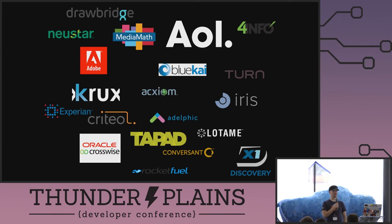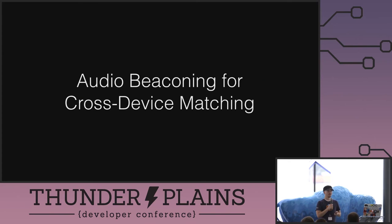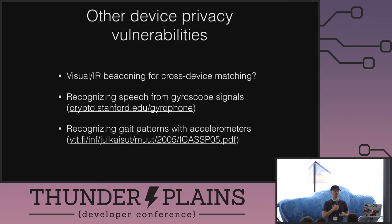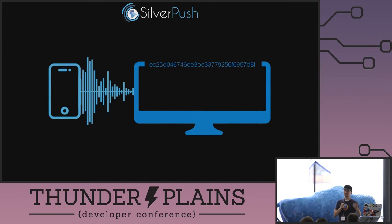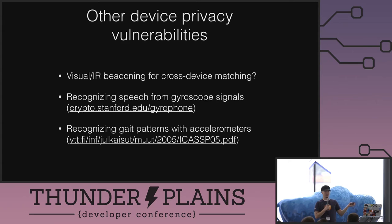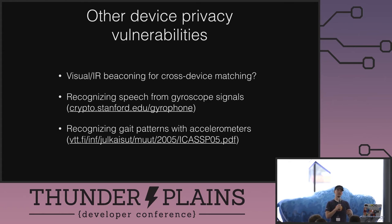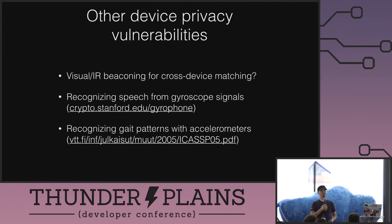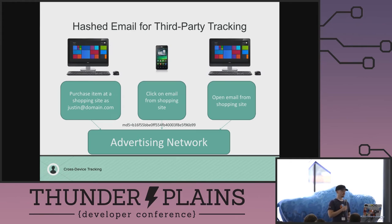There are many companies offering similar services to LiveRamp and Acxiom. There's also audio beaconing for cross-device matching — Silver Push has technology that emits a supersonic sound from your phone that your TV can listen to and sync up, establishing that the phone and TV are in the same room. There's also infrared beaconing for the same purpose. Gyroscopes in phones are sensitive enough to recognize low-level speech — social security numbers or credit card numbers — with about 70% accuracy. Accelerometers can also learn your gait patterns and identify who you are.